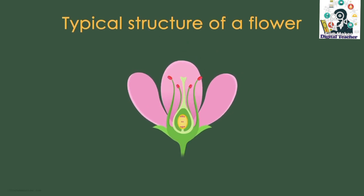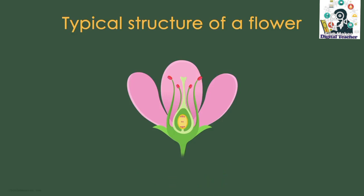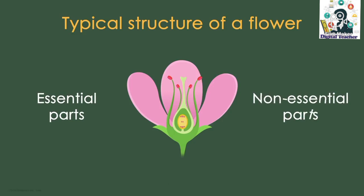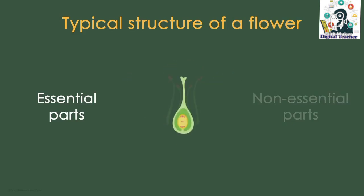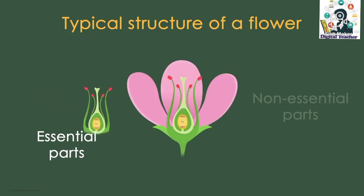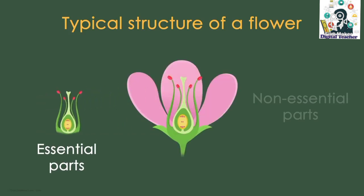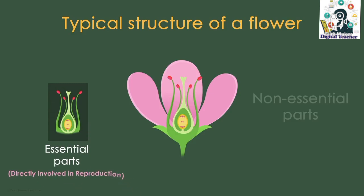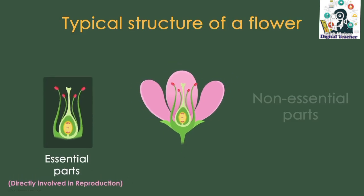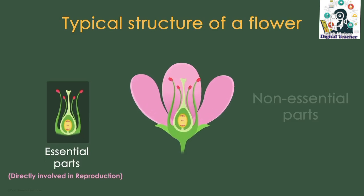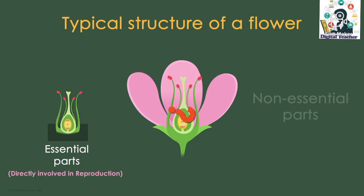A flower consists of the following parts: the essential parts and the non-essential parts. The parts of the flower such as the stamen and the pistil make up the essential parts of the flower. They are called essential parts because they are directly involved in the process of reproduction. If these parts are not present in a flower, the plant will not be able to reproduce.